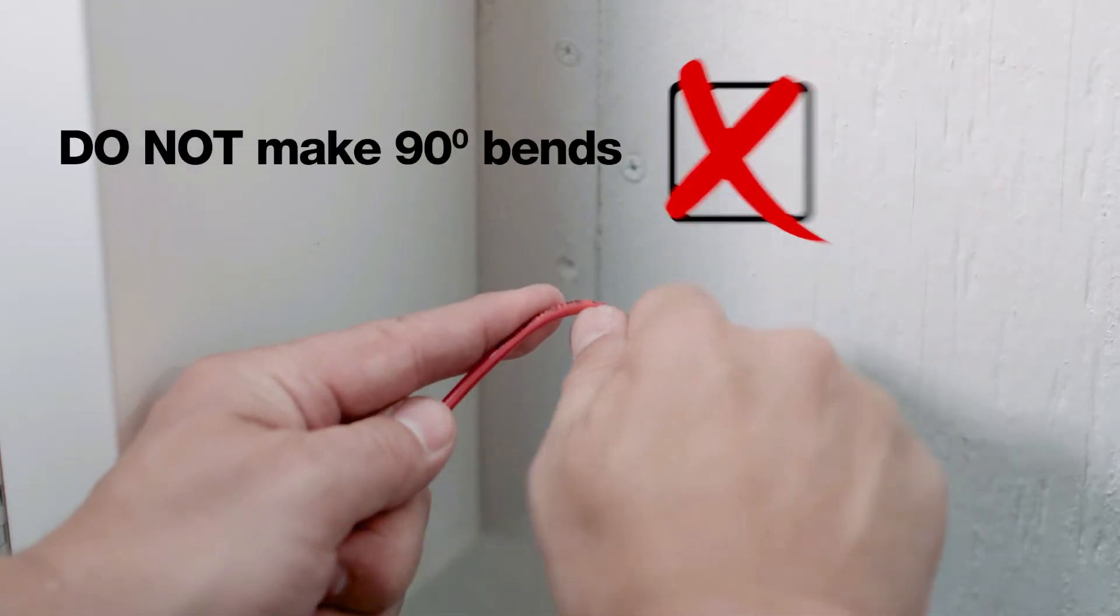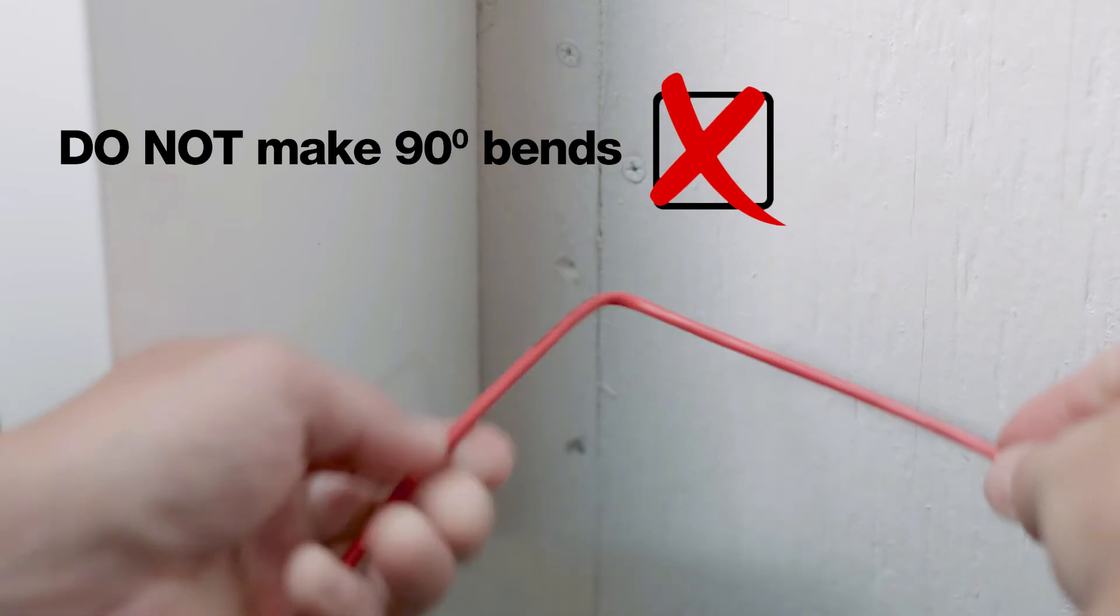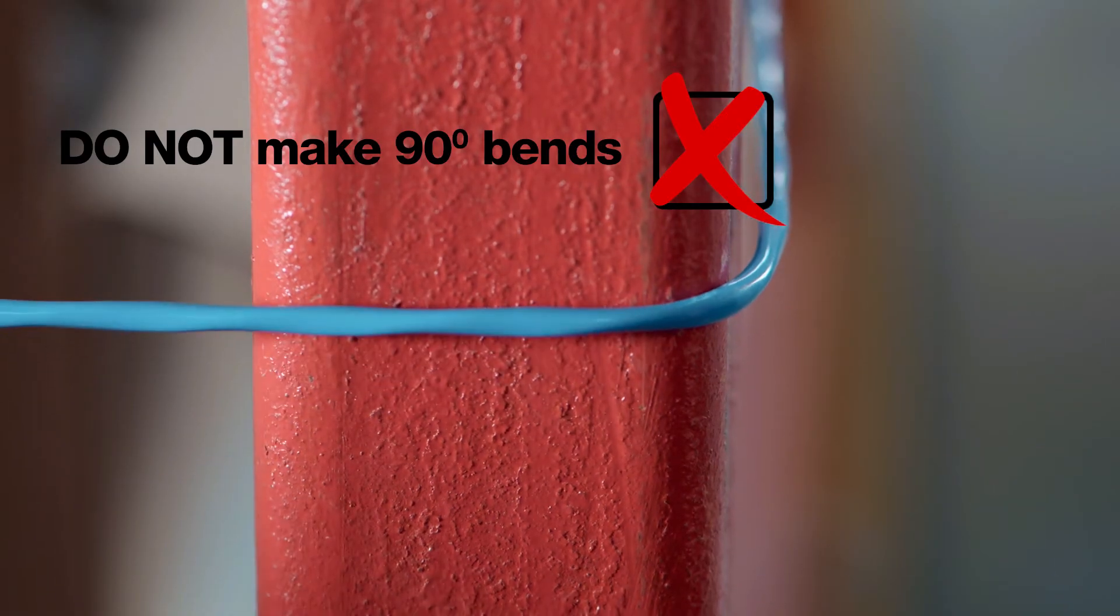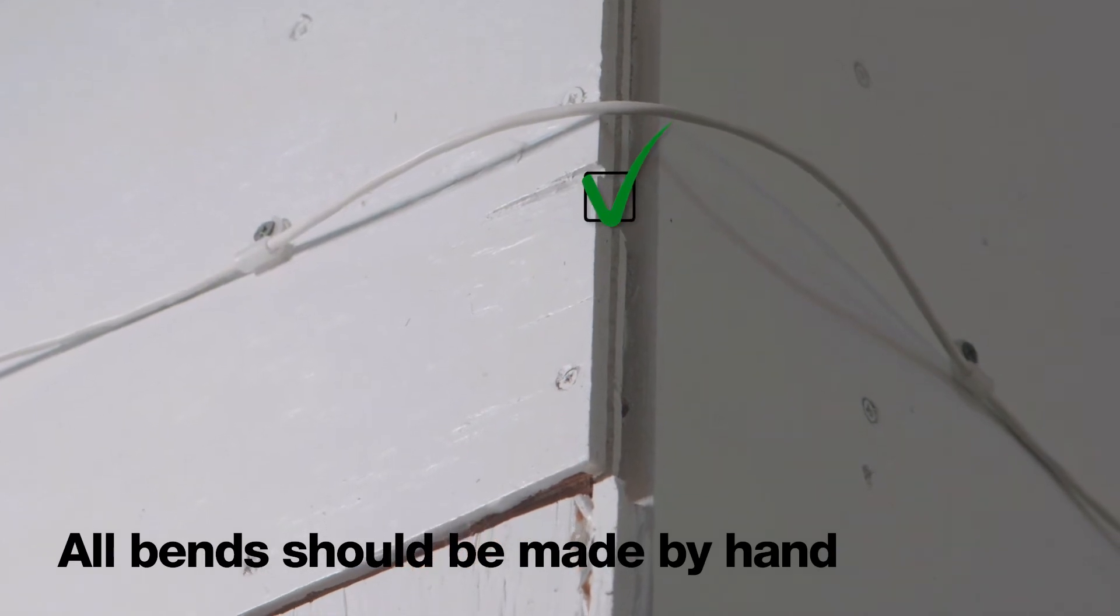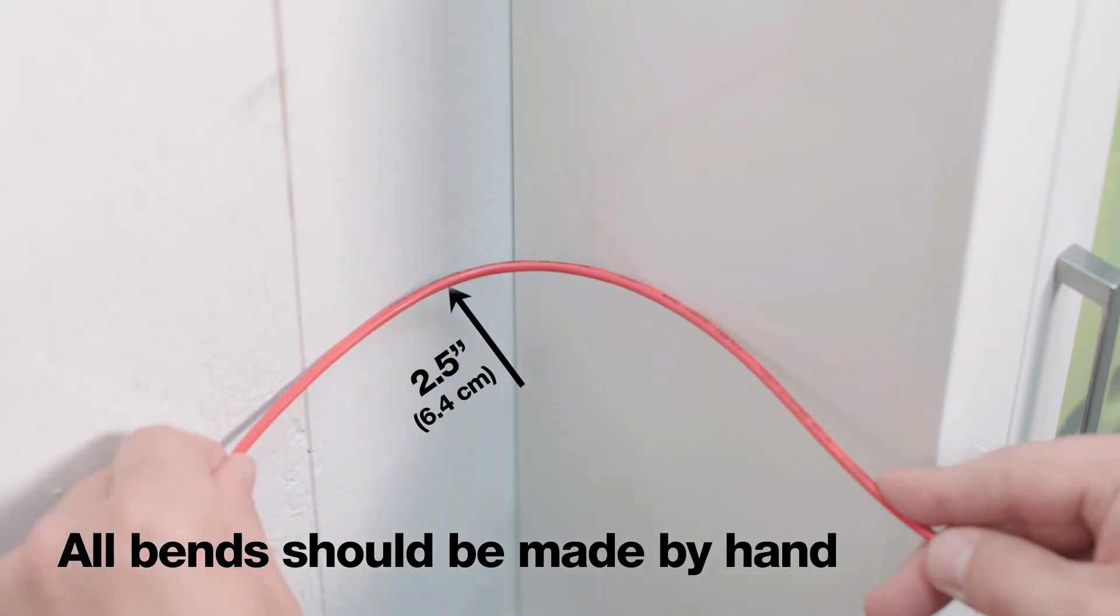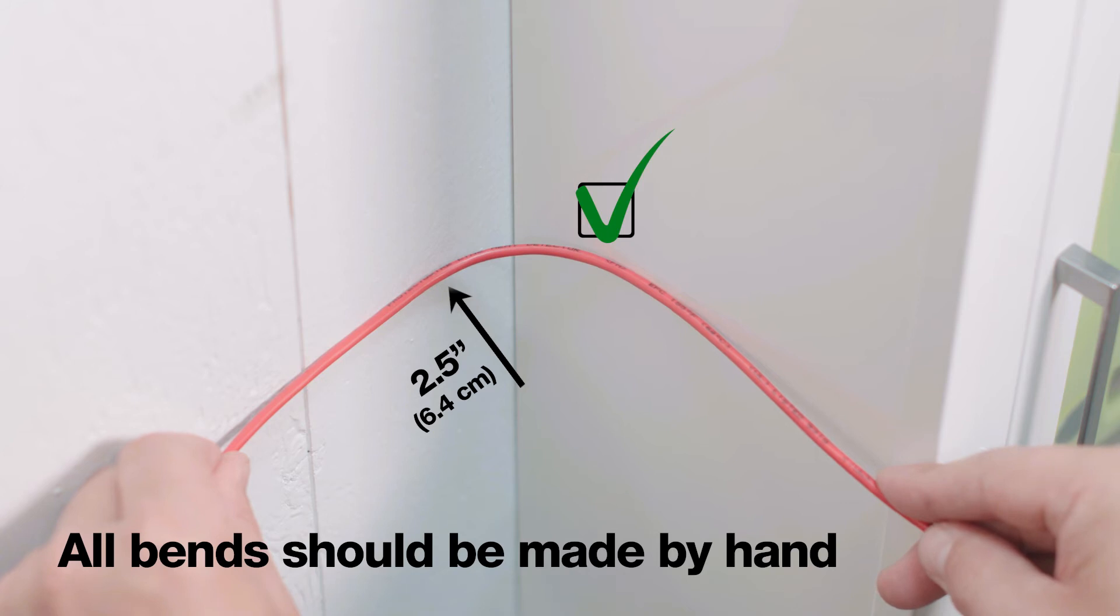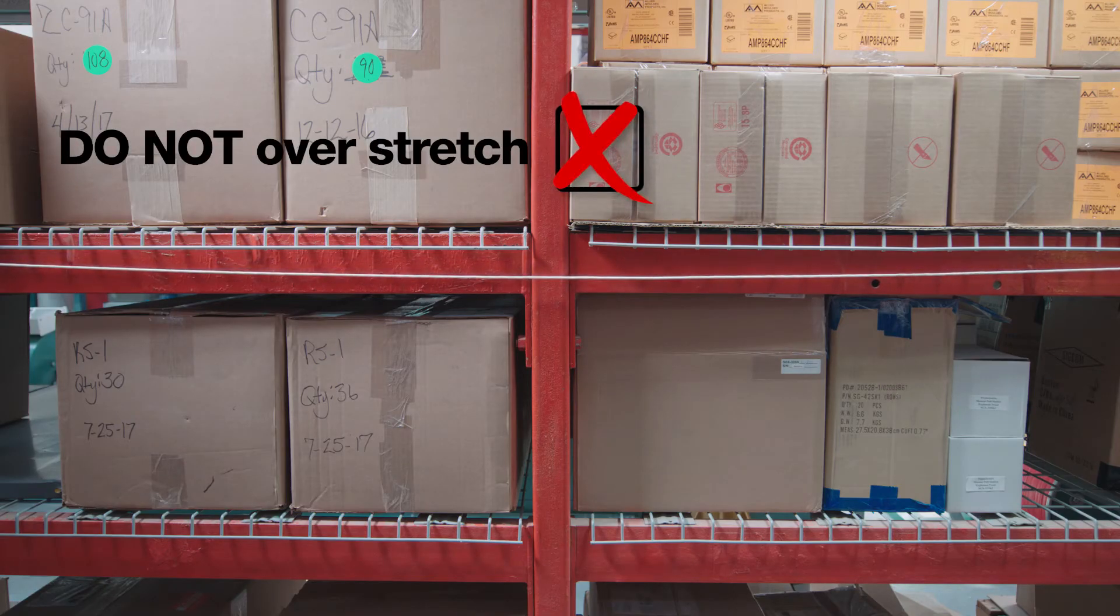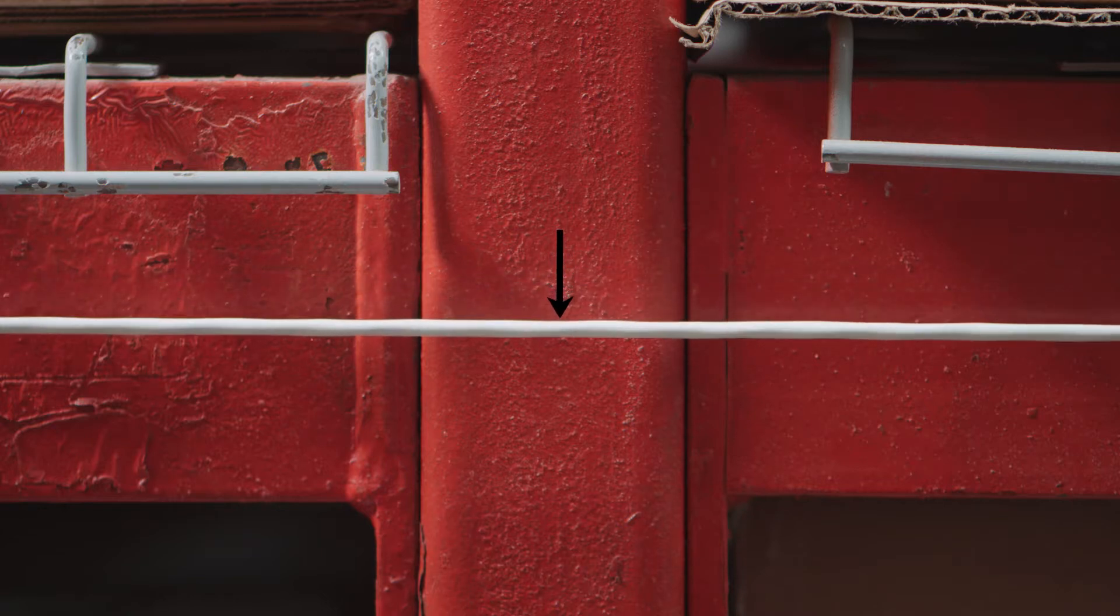Do not make 90-degree bends. All bends should be made by hand without the use of tools with a minimum two and a half inch radius. Do not over-stretch the detector runs. Some wire sag between fasteners is normal.